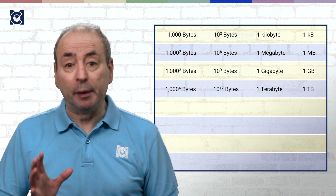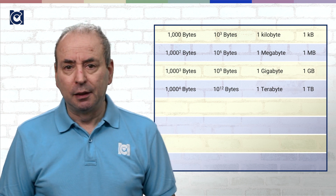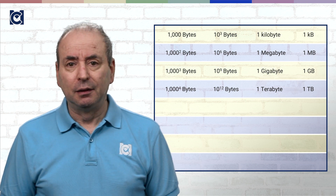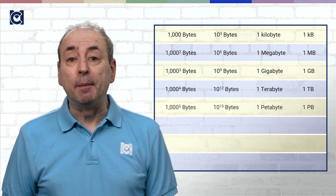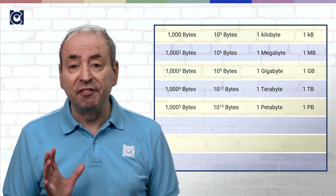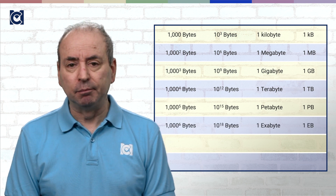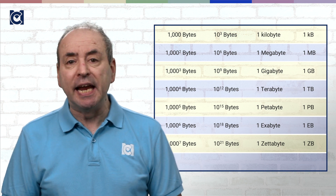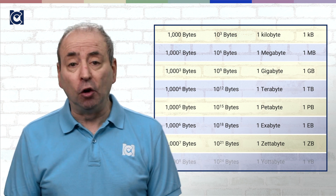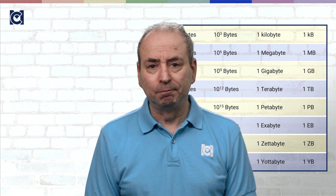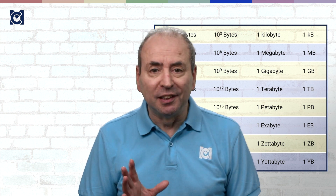But of course, if we're working with big data, we need bigger numbers. 10 to the power of 12 is small compared to the scale that big data represents. A petabyte is 10 to the 15 bytes. An exabyte is 10 to the 18 bytes. A zettabyte is 10 to the 21 bytes. And a yottabyte is 10 to the 24 bytes. 10 to the 24 is equal to 10 to the 12 times 10 to the 12 — so a yottabyte is like a tera-terabyte.